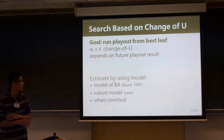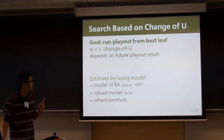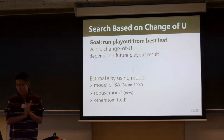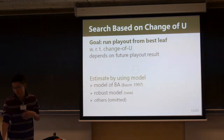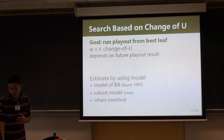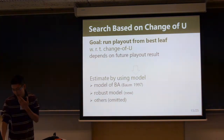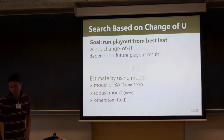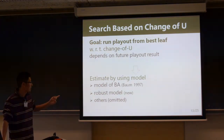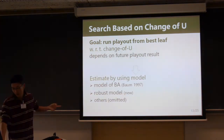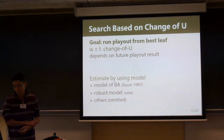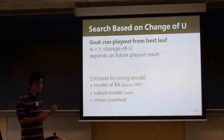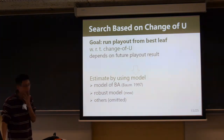But we cannot know the best leaf in advance because it depends on future play-outs. So we estimate U-value after the leaf is chosen using a model. We use some models: a model of gradient approach, a reverse model, and others. I introduce only two models due to time constraints.